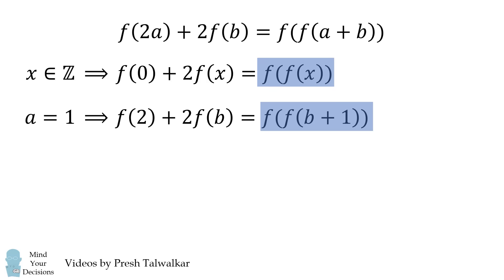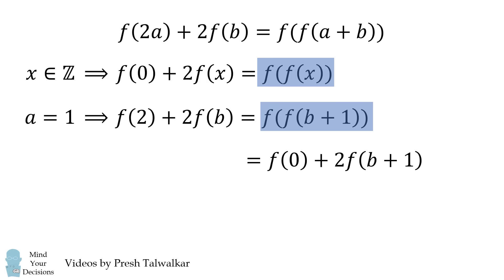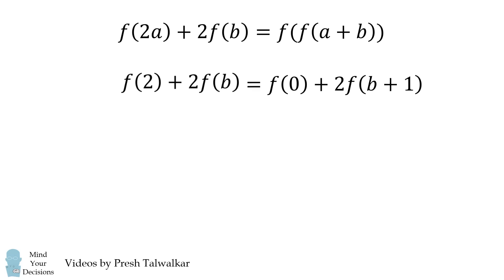Well, look at our first identity. We have a composition of F of F of X. So we substitute in B plus one wherever we see X. And we end up with F of zero plus two times F of B plus one. So this will become another identity. Now recall that this is true for all integers B. So we'll substitute X here and we'll just write that it's true for all integers X.